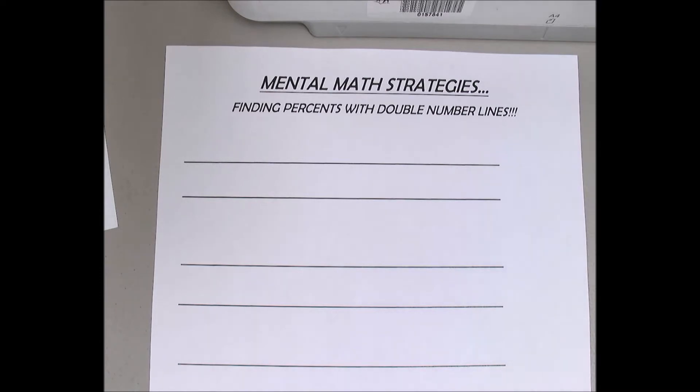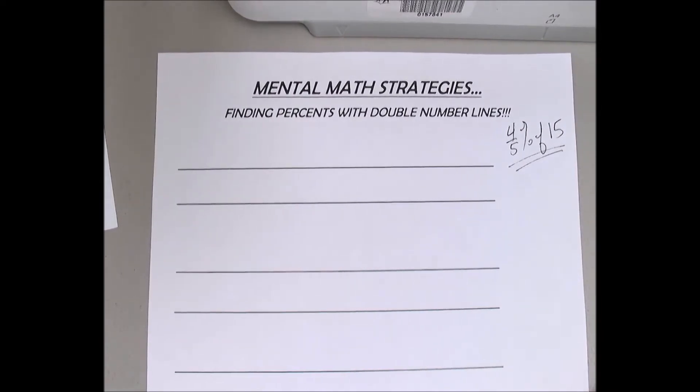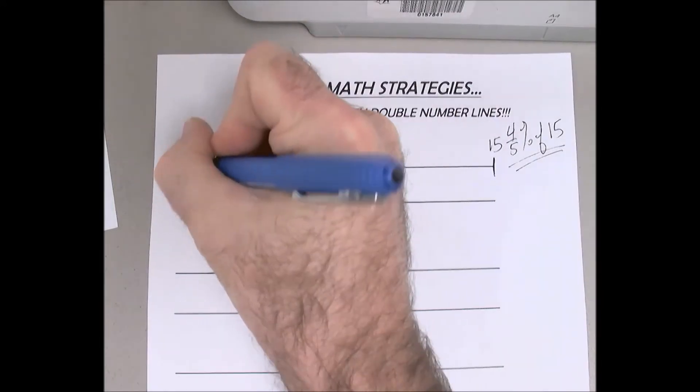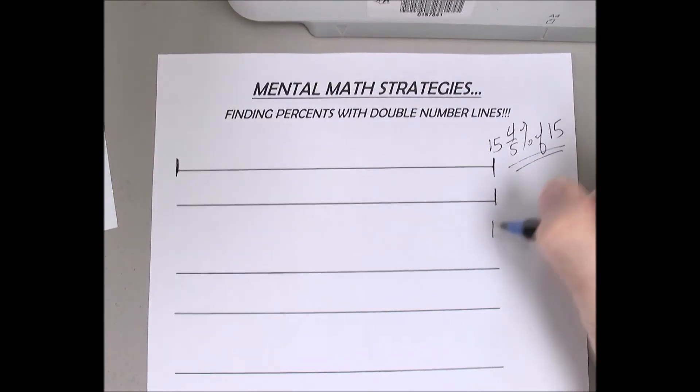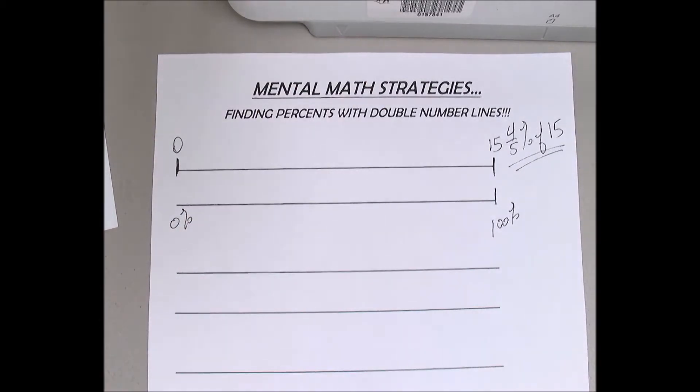Okay, so Matthew has the question, how are we going to find with mental math four-fifths of a percent of 15 using mental math? We can visualize this. So our target number is 15. A hundred percent of 15 is 15. Zero percent of 15 is zero, right?